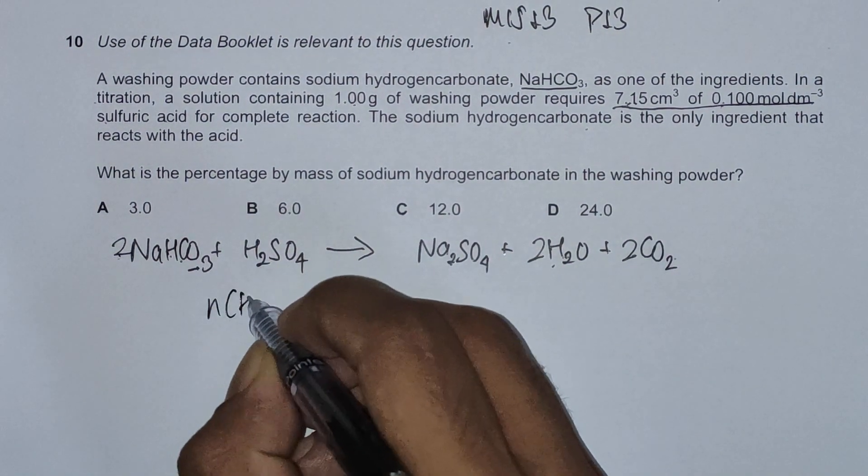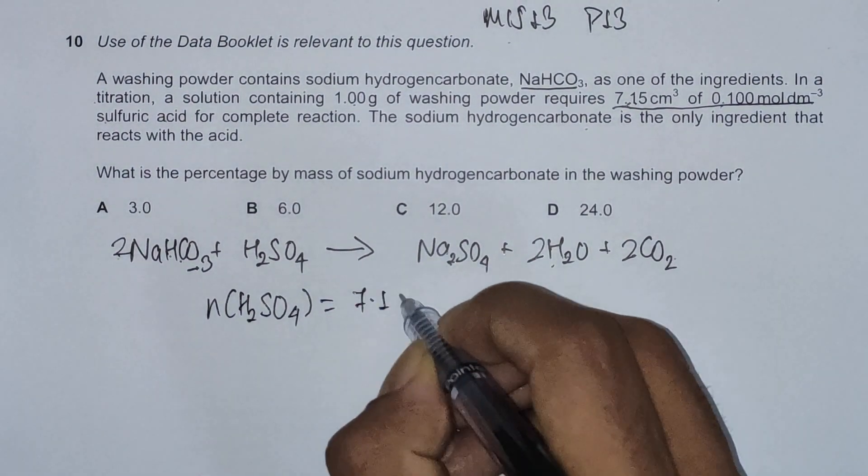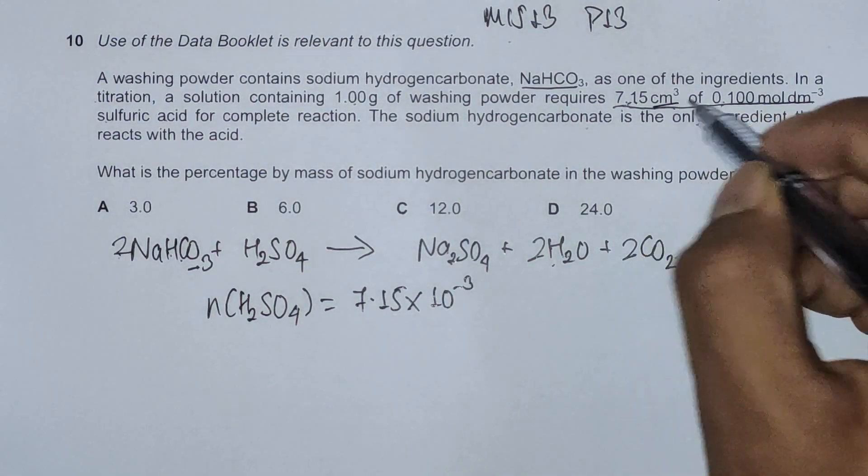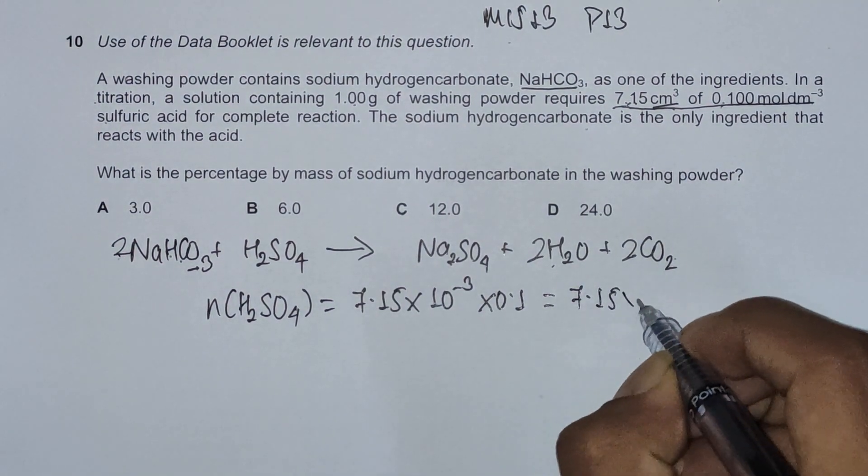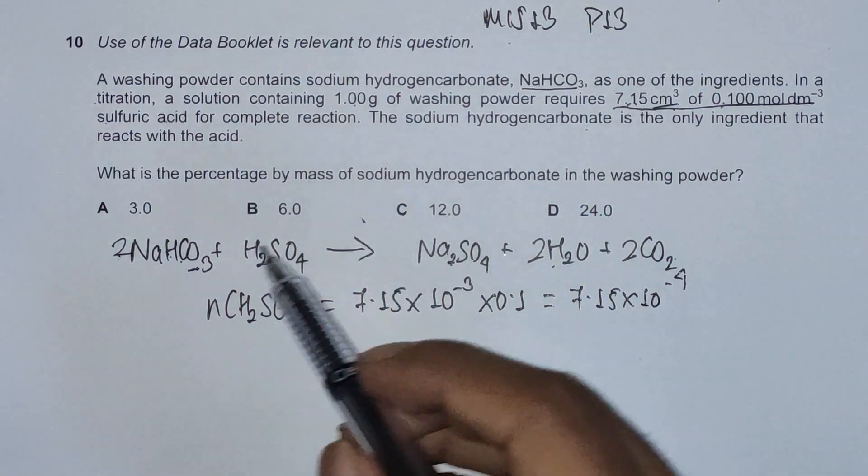We've been given that the solution requires this volume of this concentration sulfuric acid. So moles of H2SO4 equals 7.15 × 10⁻³ (converting cm³ to dm³) multiplied by 0.1, which equals 7.15 × 10⁻⁴.